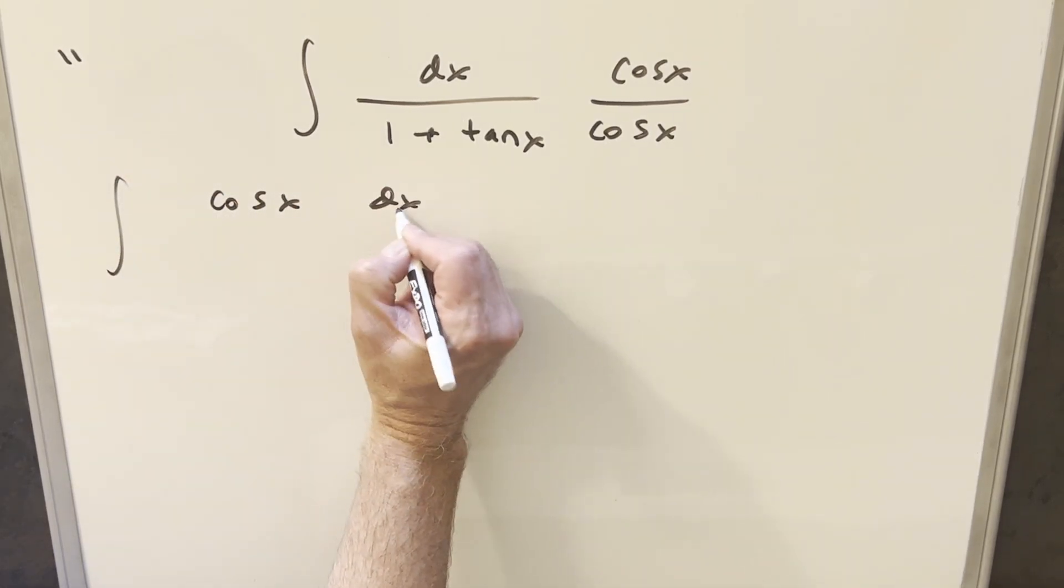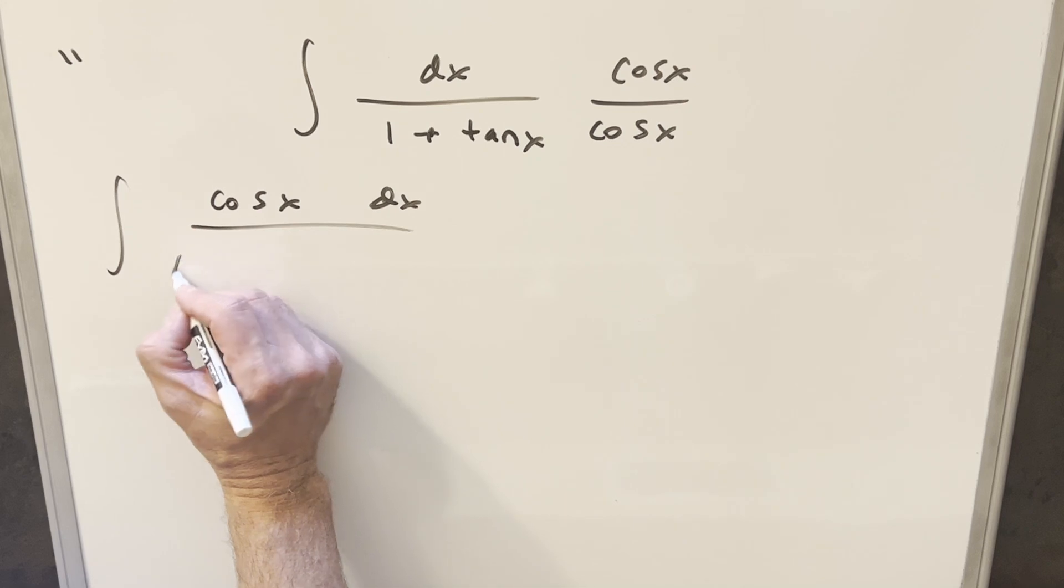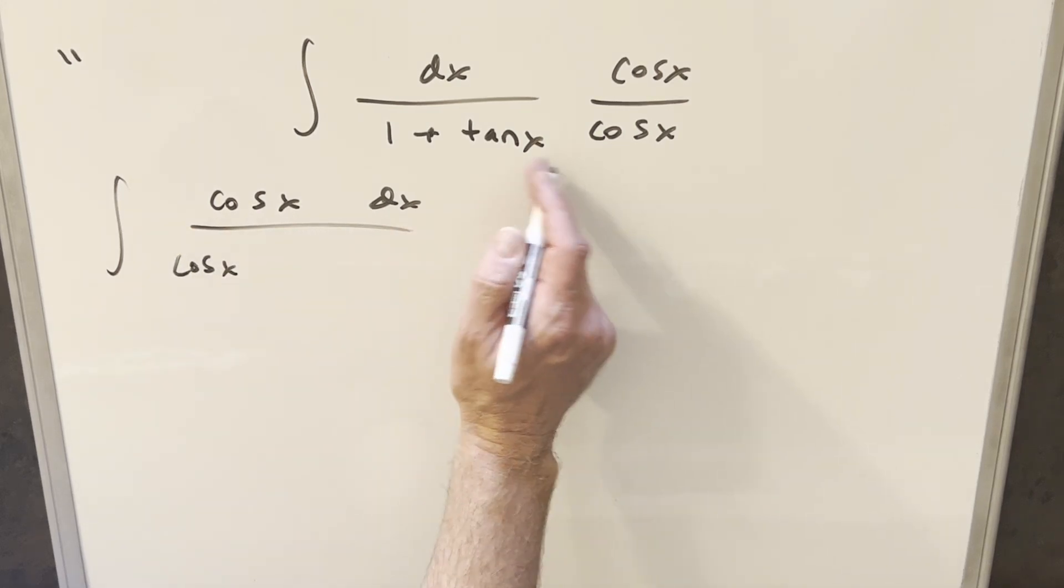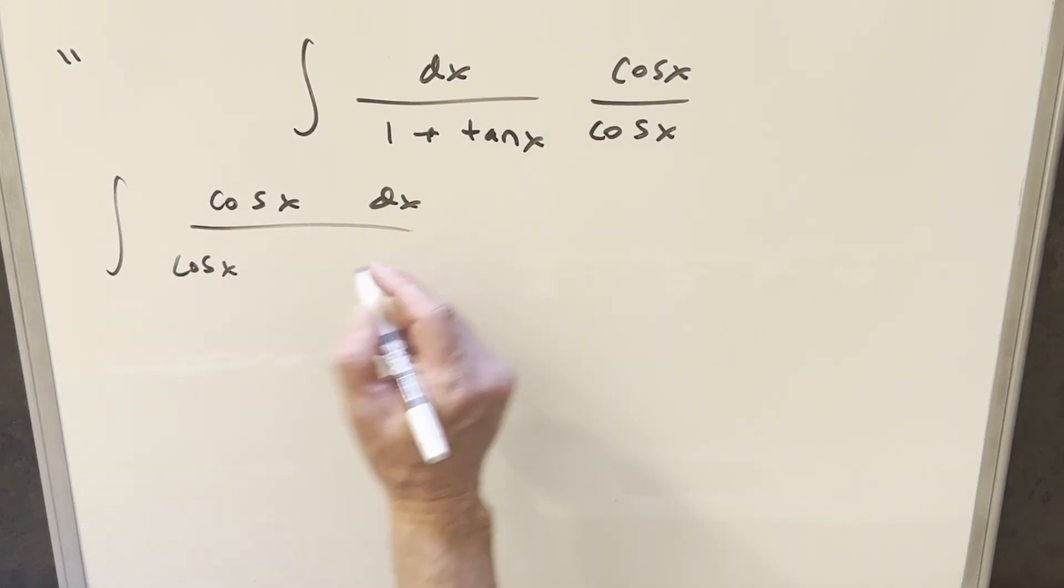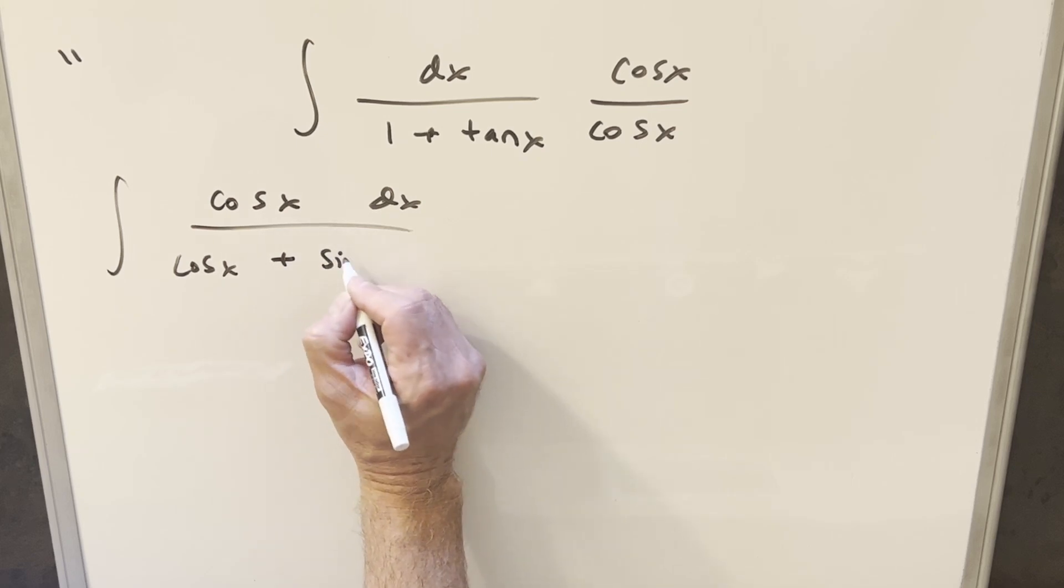we have cosine x in the numerator. Cosine x times 1 is cosine x. Cosine x times tangent is tan sine over cosine, so the cosine's canceling. We just have sine x here.